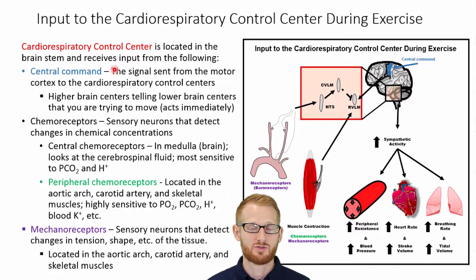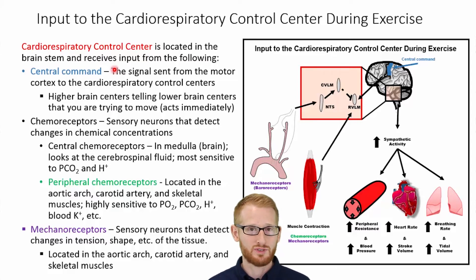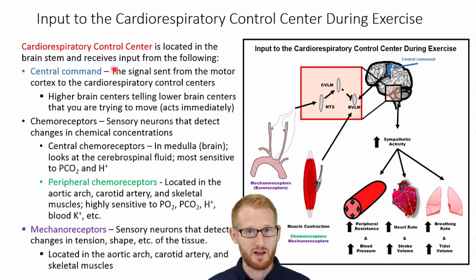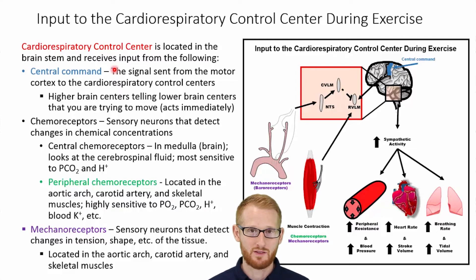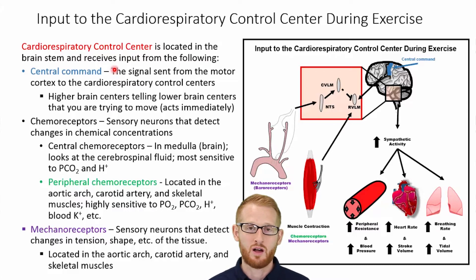The central command signal gets integrated in the cardiorespiratory control center, which is the part of the brain stem that controls whether or not you are breathing heavier or less heavy, as well as heart rate. So the same signal that tells your muscle to contract also tells your cardiorespiratory control center, 'Hey, we're about to contract the muscle — you should probably breathe a little more heavily.' If it views the signal as strong enough, it will cause you to breathe more heavily.